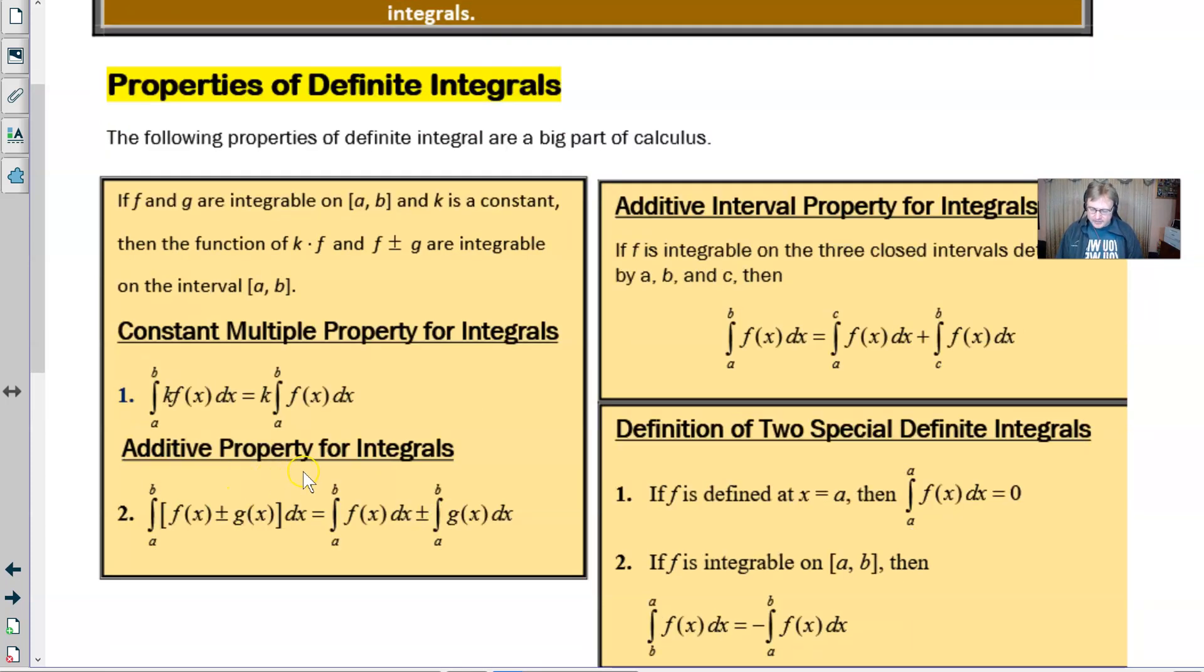The additive property for integrals just simply means if you're taking the integral of f plus g, you can just take the integral of f plus the integral of g. Likewise, you can split it up if it were a subtraction. Again, the same property applies for limits and for derivatives. So I think those two are very reasonable, things that you're probably already assuming to be true anyway.